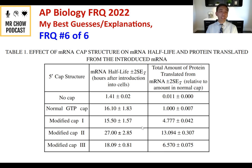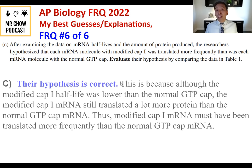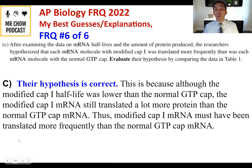Question 6C: Evaluate the hypothesis that each modified cap one mRNA was translated more frequently than each normal GTP cap mRNA. The hypothesis is correct. Although modified cap one had a lower half-life than the normal GTP cap, the modified cap one mRNA still translated much more protein than the normal GTP cap mRNA. Therefore, modified cap one RNA must have been translated more frequently than the normal GTP cap mRNA.